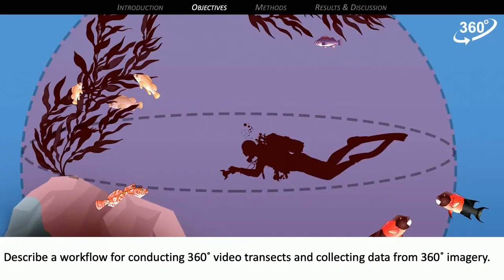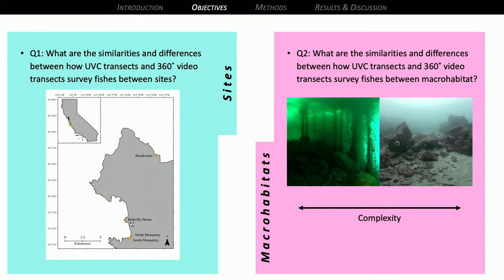My objectives were to describe a workflow for conducting 360 video transects, as well as describe how to collect data from those 360 videos. I based this experiment off of an ecological study, just to set some paradigms and ground rules moving forward. I split the project into two questions to govern my experimental design: what are the similarities and differences between how UVC transects and 360 video transects surveyed fish between sites, as well as between macro-habitats? The sites are distinct places that were geographically separated, but all of the sites themselves contain multiple macro-habitats or habitat types.